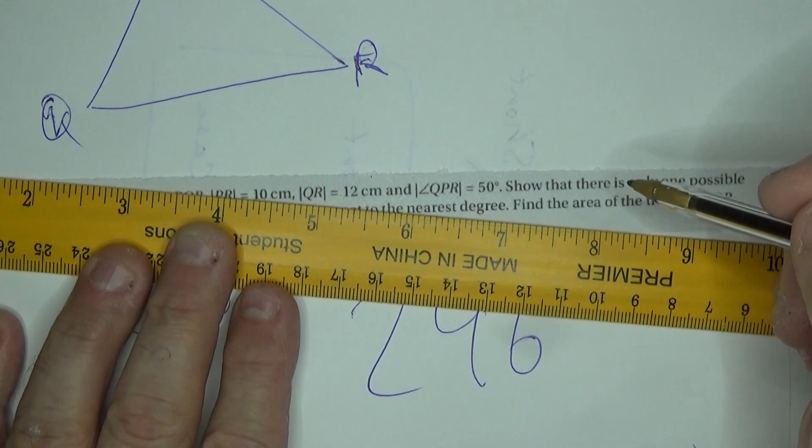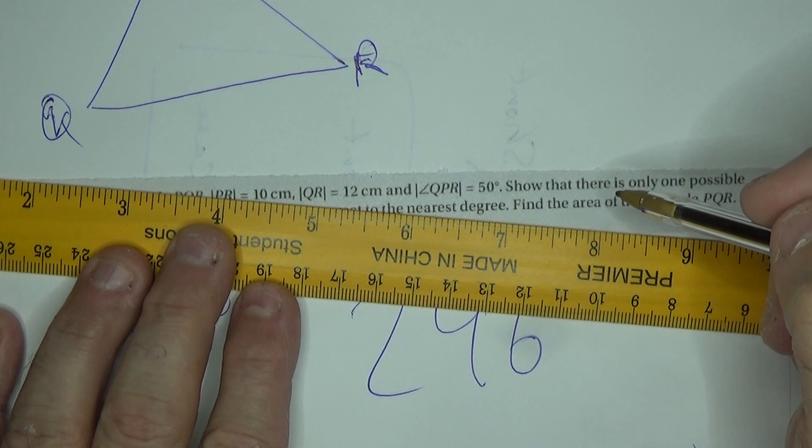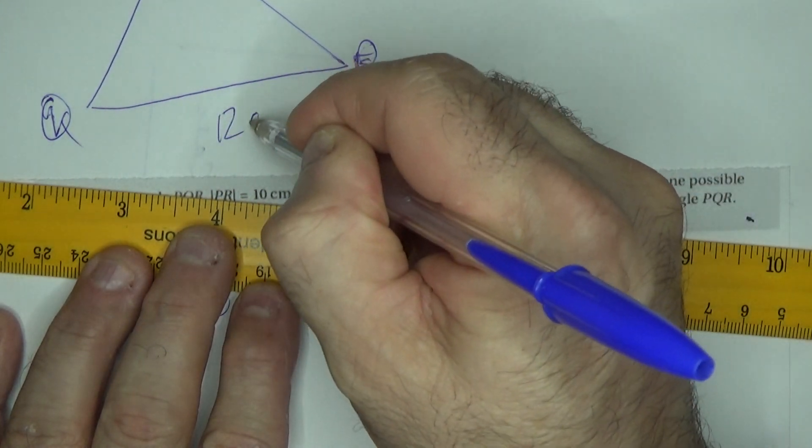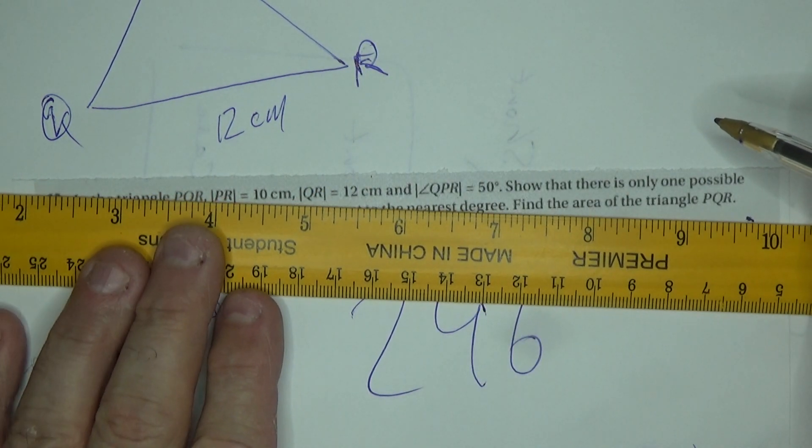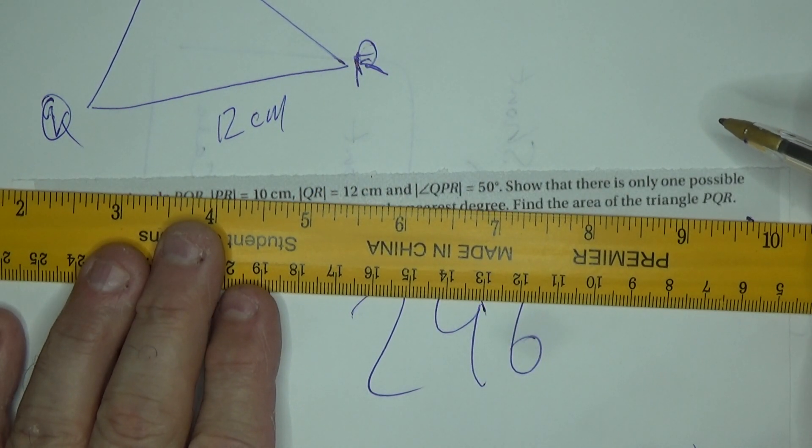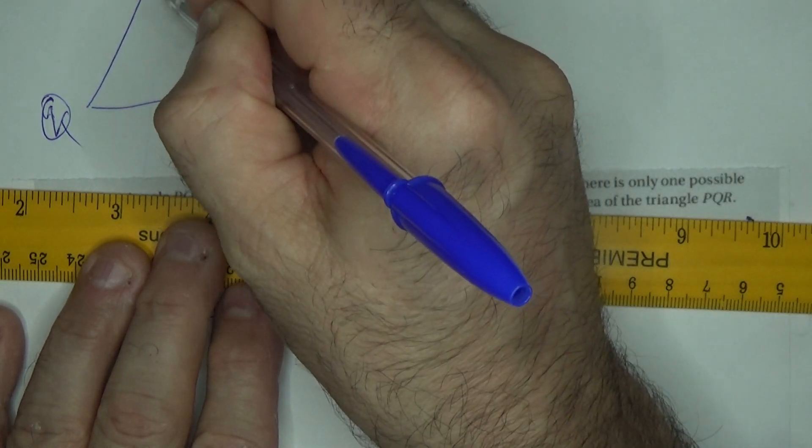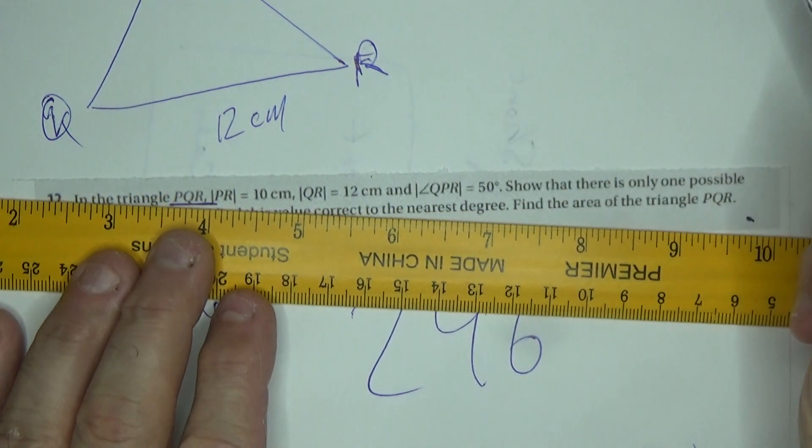Okay, so we have 10 centimeters here. We have Q to R is 12 centimeters. And angle PQR, the angle at P is 50 degrees.